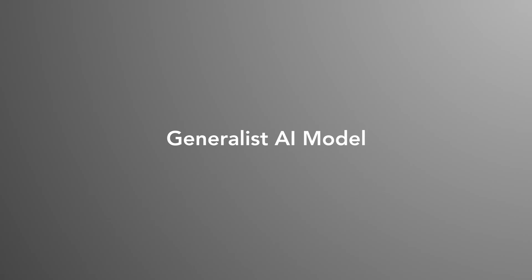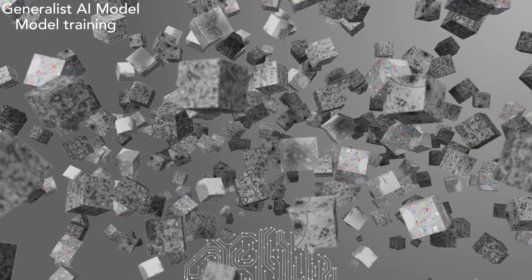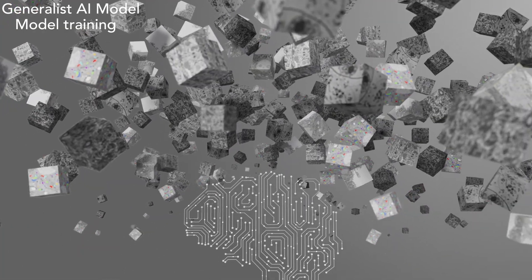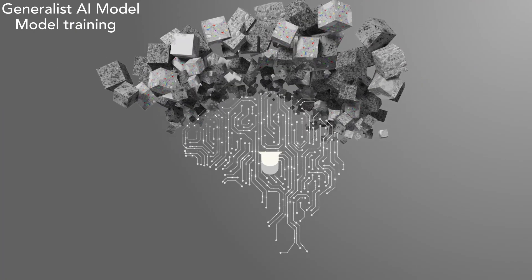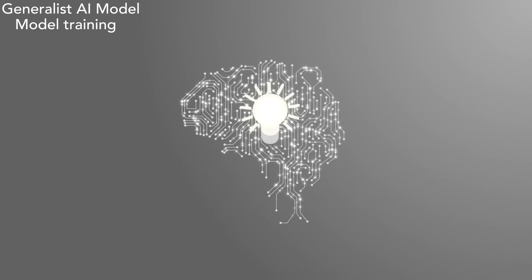In contrast, a generalist model trains on a massive number of images of mitochondria from a wide variety of contexts, images from different tissues, using differing sample prep protocols, imaging parameters, and so on.